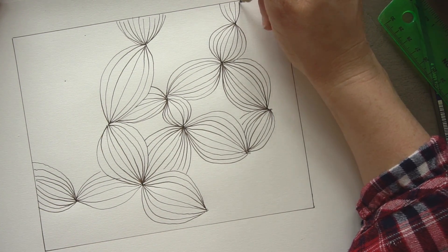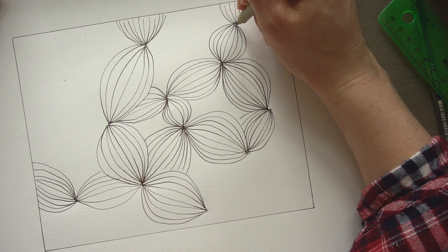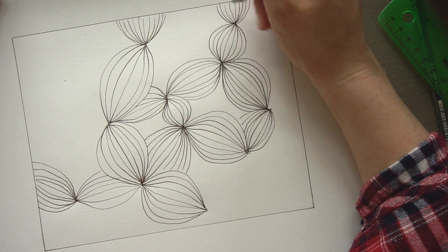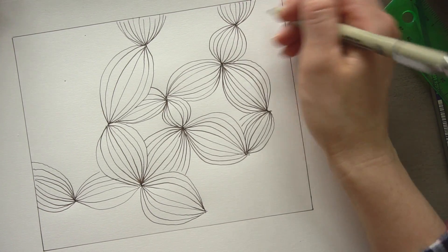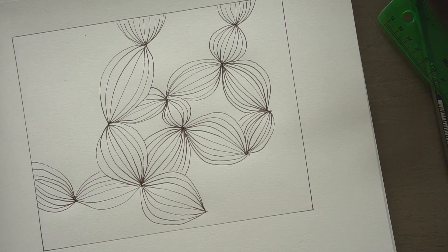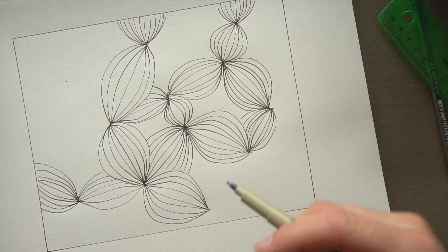So when you get to the edge of your paper, just how I'm doing it, you can just kind of bring your lines wherever you think this would go. It could go in a different direction than I've drawn it here. We could connect some of these lines in here as well.